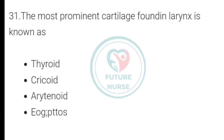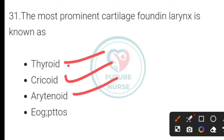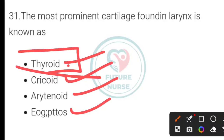The most prominent cartilage found in the larynx is known as what? Options: thyroid, cricoid, arytenoid, or epiglottis. The correct answer is thyroid cartilage.